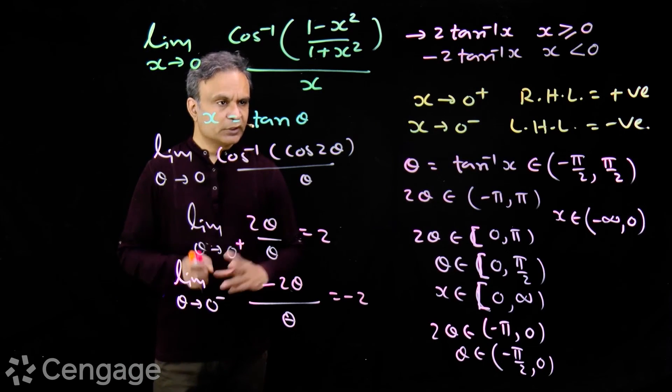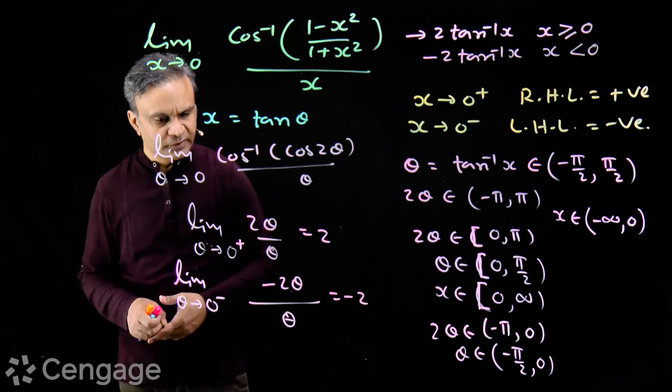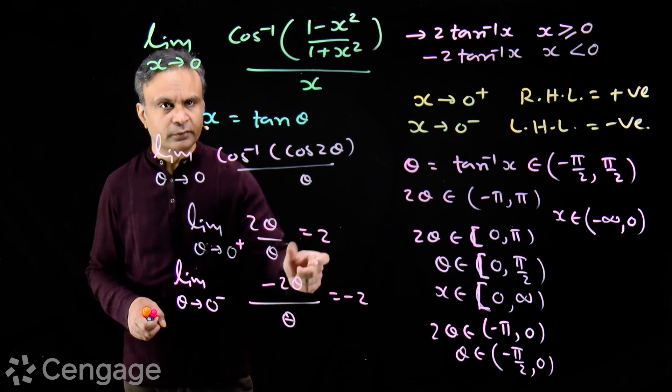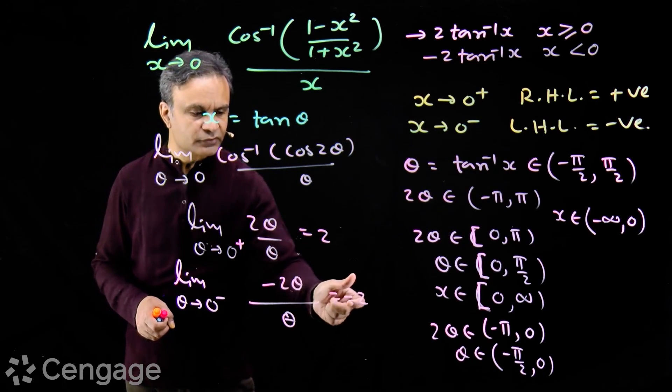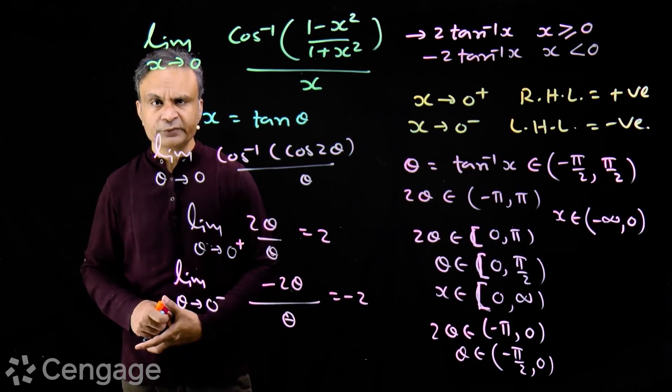So the limit does not exist. The right hand limit is 2 and the left hand limit is −2.